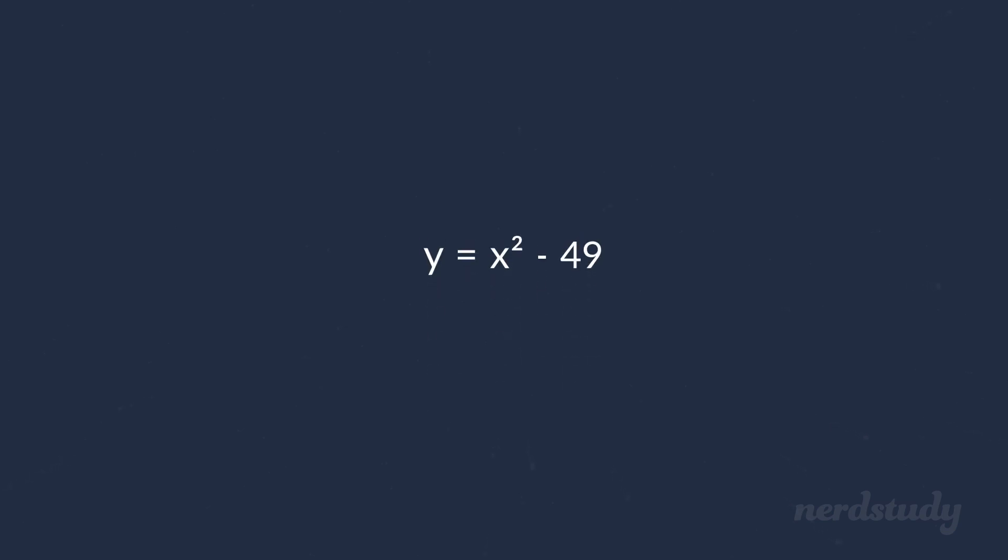if we were given x squared minus 49 or a difference of squares like we mentioned earlier, we would perform what is called factoring the difference of squares, which is to find the two conjugates of this.